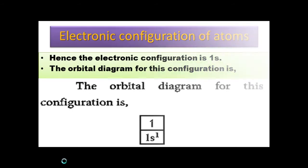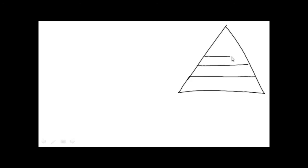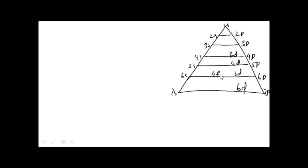Next, we are going to fill electrons in orbitals according to the Aufbau principle. The Aufbau principle means electrons are filled in the increasing order of energy level. Using the diagonal rule, the orbitals in order are: 1s, 2s, 2p, 3s, 3p, 4s, 3d, 4p, 5s, 4d, 5p, 6s, 4f, 5d, 6p, 7s, 5f, 6d, 7p.